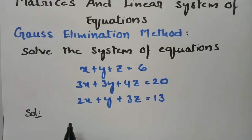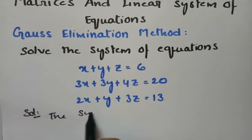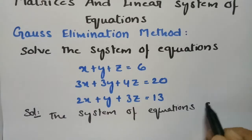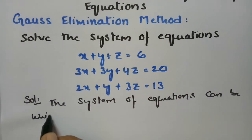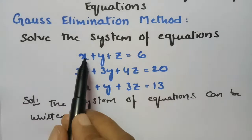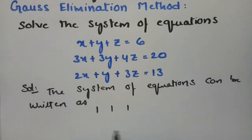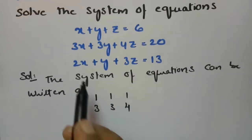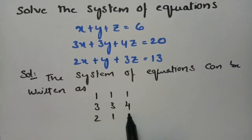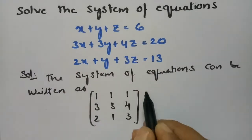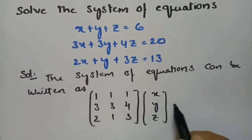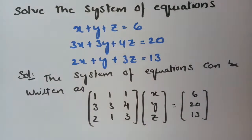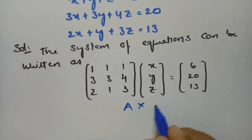In order to solve this, the system of equations can be written as a matrix form. The coefficient of x is 1, 1, 1 in the first row; x is 3, y is 3, z is 4 in the second row; and x is 2, y is 1, z is 3 in the third row. The x, y, z vector is equal to 6, 20, and 13. So this is of the form Ax = b.